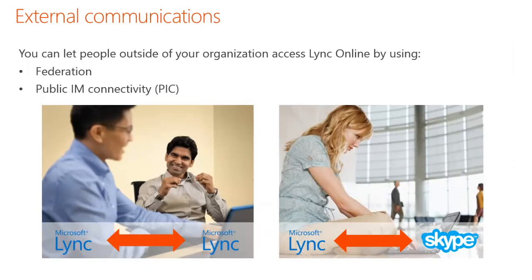You can control Lync Online access to people outside your organization through federation and public IM connectivity. Federation gives connection to users in other companies that use Lync Online as well as those hosting their own Lync Server on-premises. Federated contacts can see presence, communicate by instant messaging, and make Lync-to-Lync audio and video calls. With public IM connectivity, Lync users can see presence, send messages, and call anyone on Skype and other public IM services.